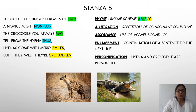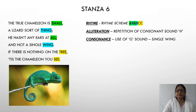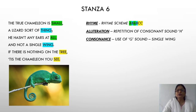In the last stanza, the rhyme scheme is A-B-A-B-C-C. Then alliteration: repetition of the consonant sound H — 'he hasn't' in the third line. And then consonance: use of the G sound in 'single wing' — the G sound is used here.